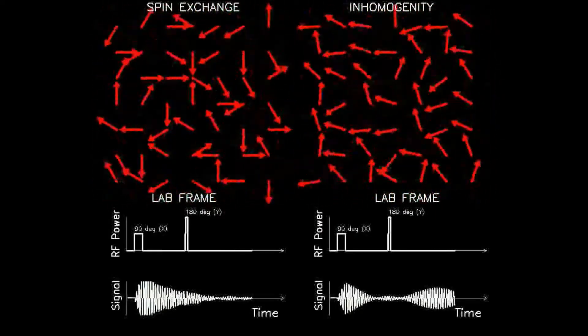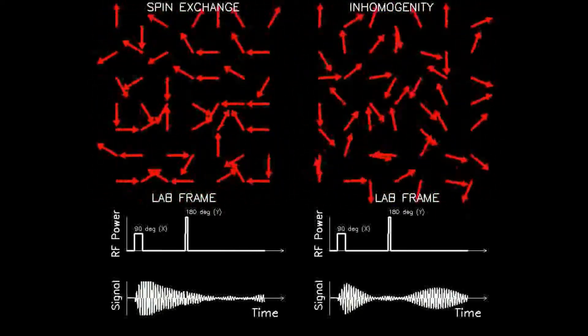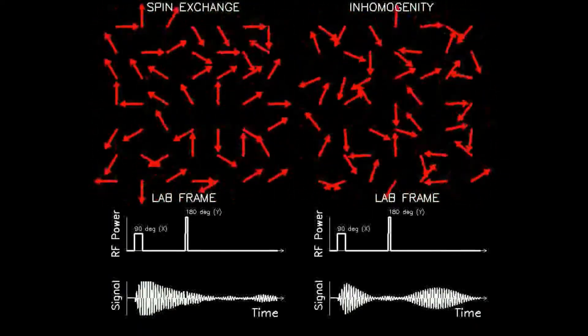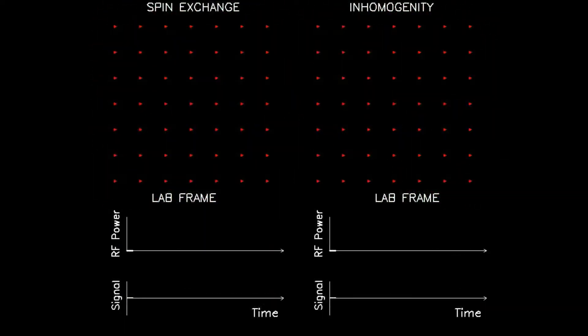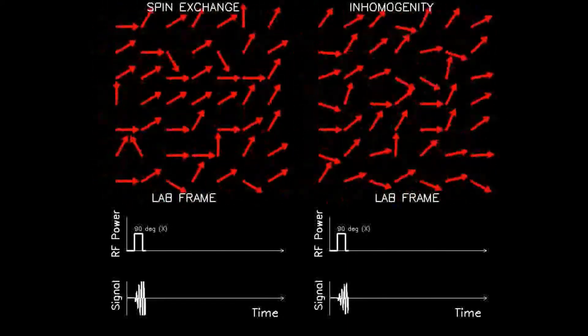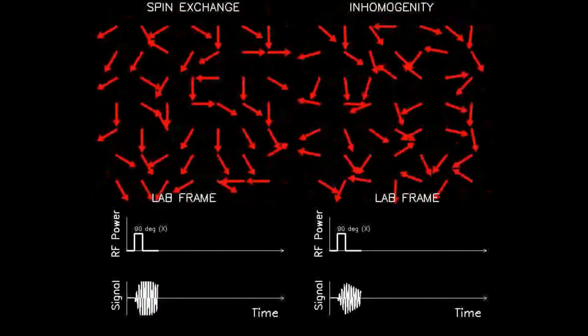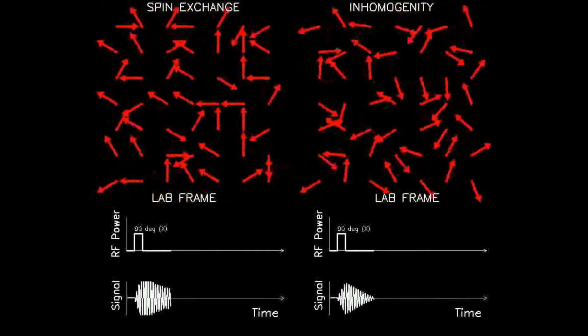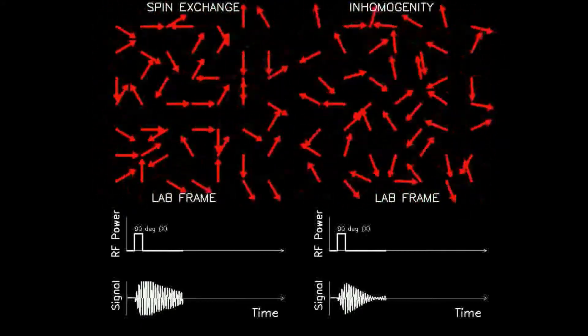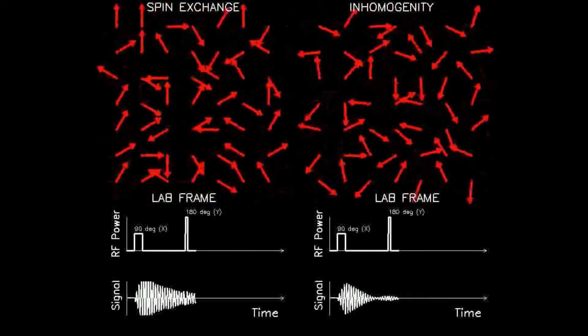The right side shows that the signal lost due to inhomogeneities is recovered shortly after a 180 degree pulse, as shown by the lower sinusoidal curve. This demonstrates that with a spin-echo technique, a second peak of signal can be created which eliminates the effects of field inhomogeneity.